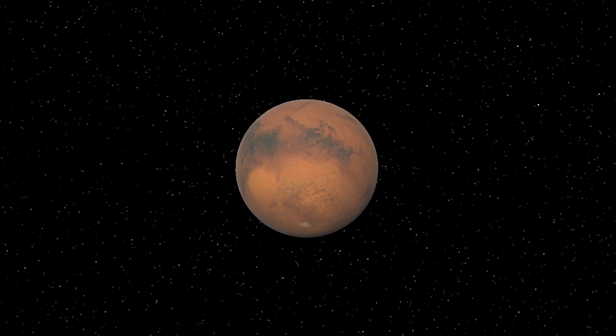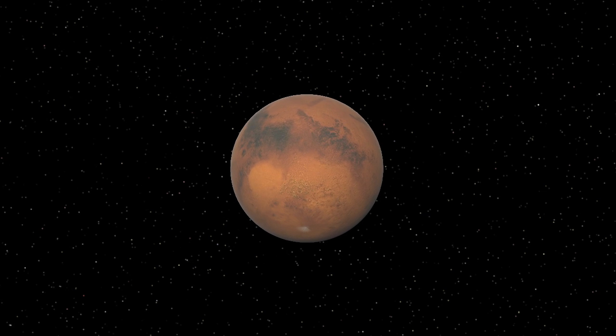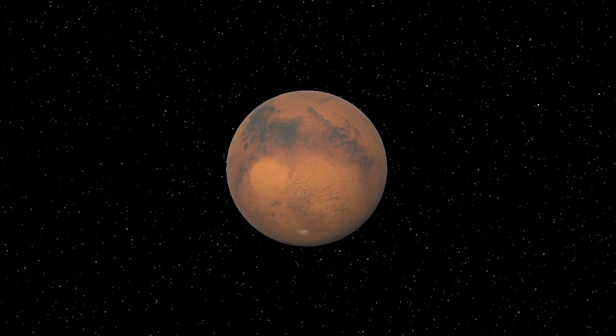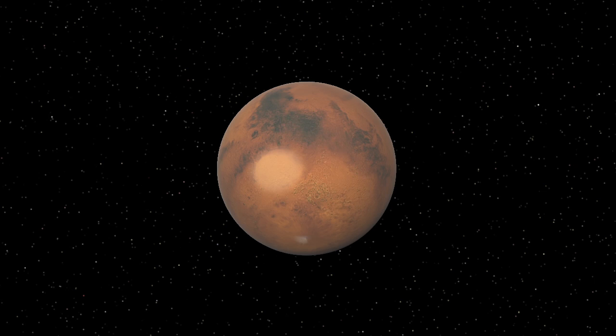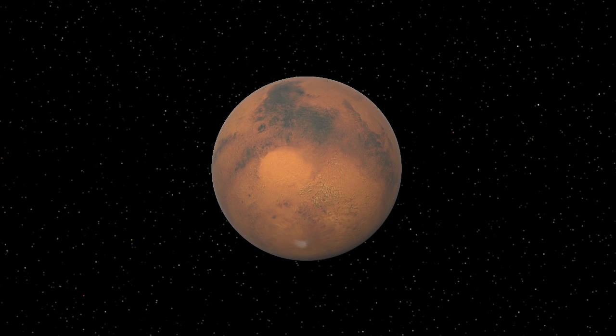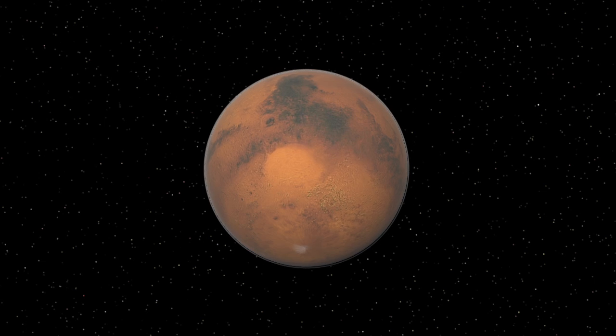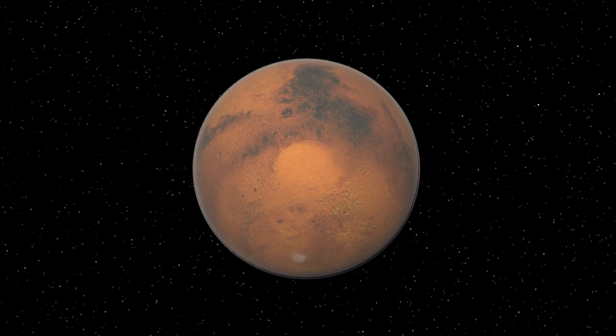Looking to our neighbor Mars, we see a massive impact scar in its southern hemisphere. This area, known as the Hellas Basin, must have formed from an asteroid impact long ago. The resulting plume of molten material would have been blasted into space, some of it eventually reaching the ancient Earth.